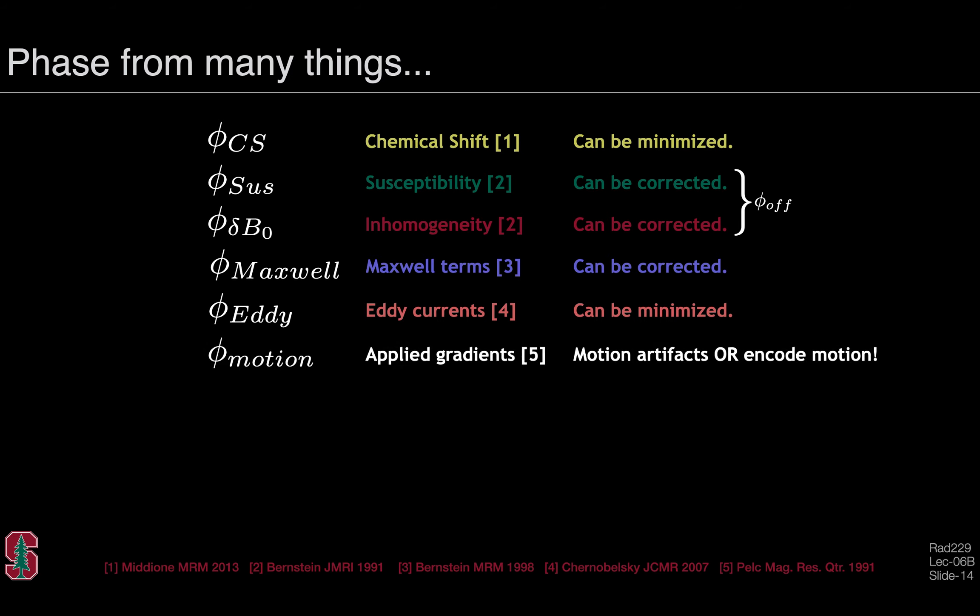Interestingly, the phase of the transverse magnetization signal can also be affected by the applied gradient moments. That's a concept that's relatively familiar already because we use gradients to induce phase during phase encoding. But motion artifacts can also arise through the product of the encoding gradients and the position history of the spin system. This motion phase can lead to motion artifacts, or in fact it can actually allow us to encode motion. In this lecture, we'll talk mostly about motion artifacts and how to mitigate them; in the next lecture, we'll talk about how to encode motion.